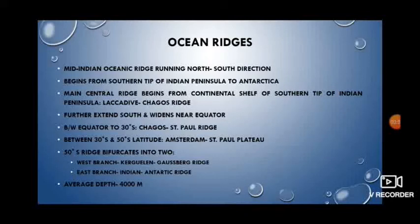Moving to the ocean ridges of the Indian Ocean, like the Atlantic Ocean, the Indian Ocean also has a mid-oceanic ridge running in a north to south direction. The central ridge, or the mid-oceanic ridge, is known as the Mid-Indian Ocean Ridge. It extends from the southern tip of the Indian Peninsula in the north to Antarctica in the south, almost in a north-south direction, and forms a continuous chain of highlands.